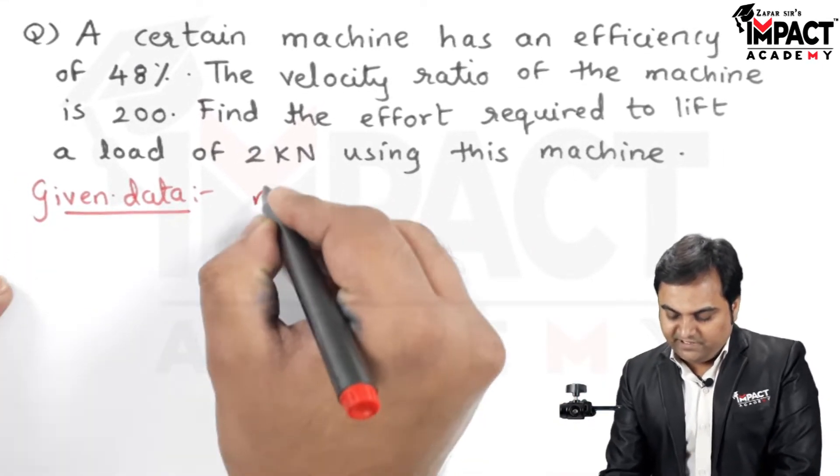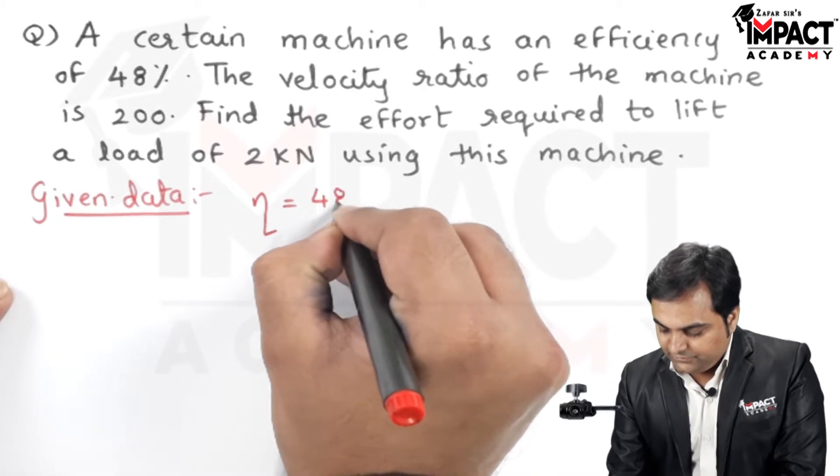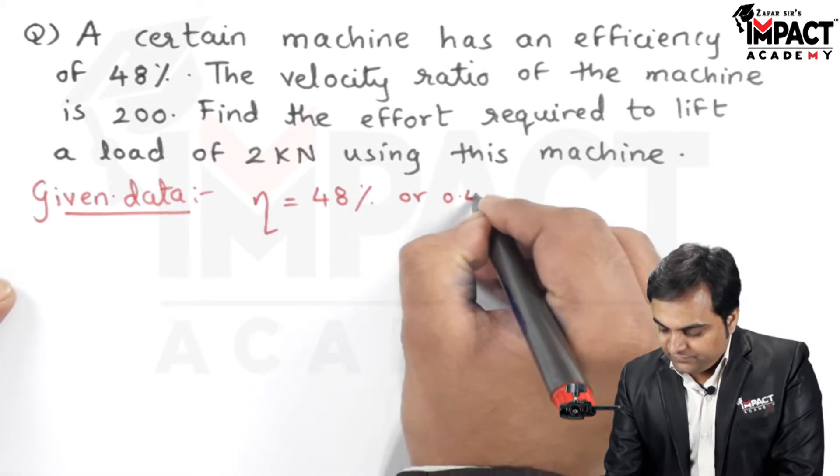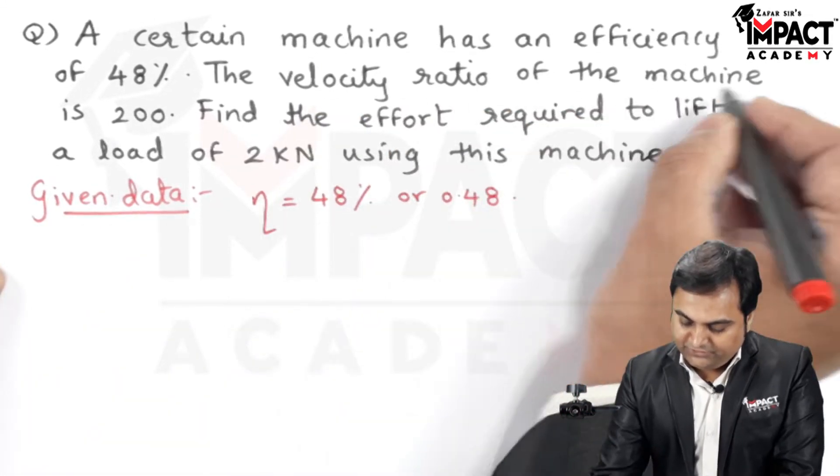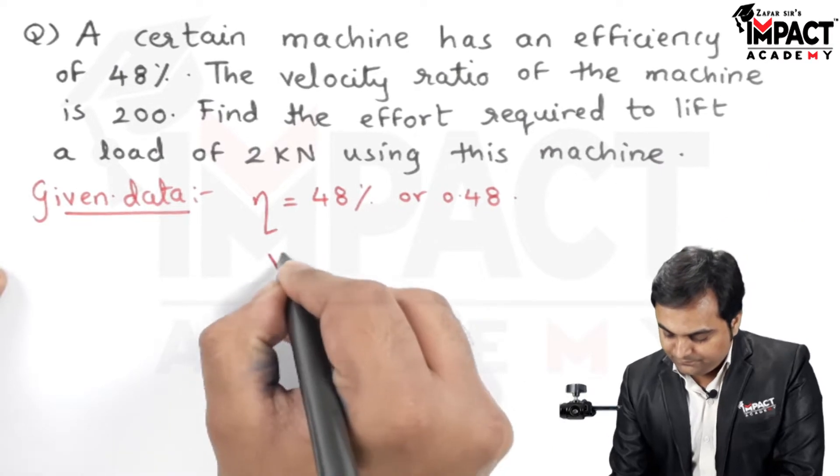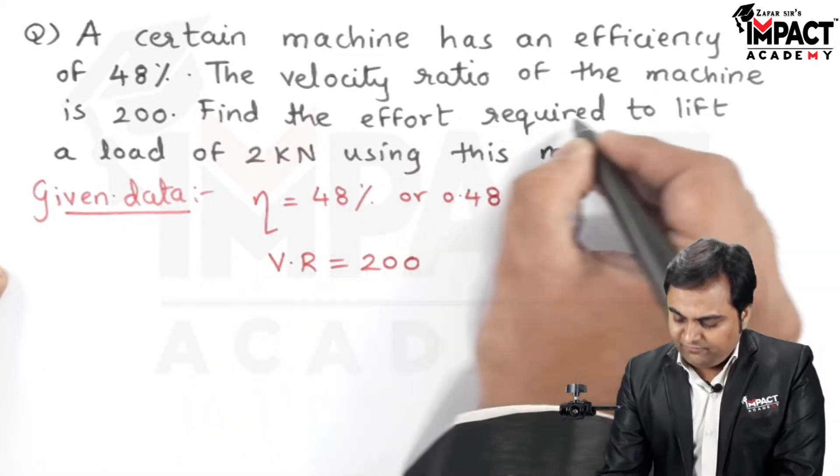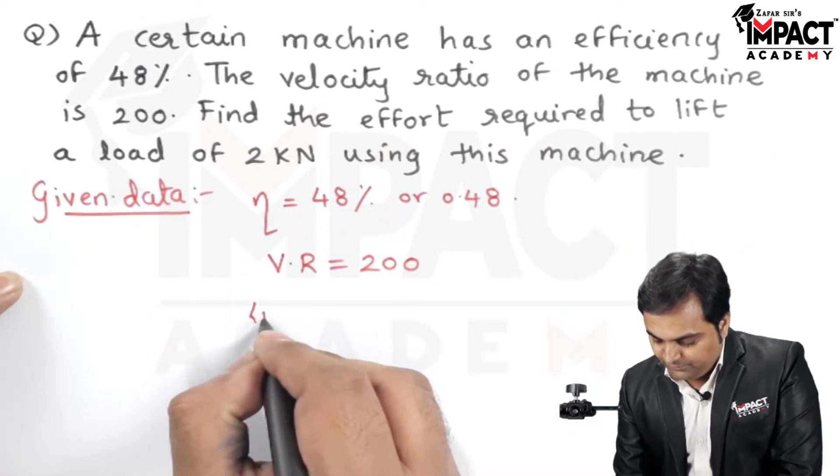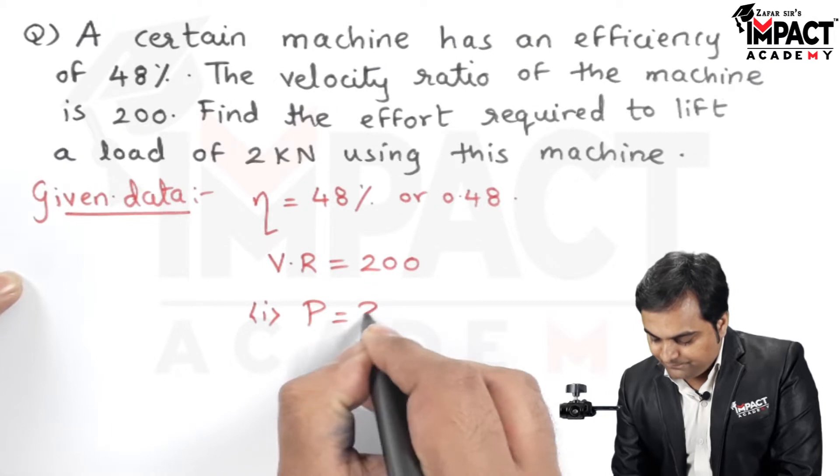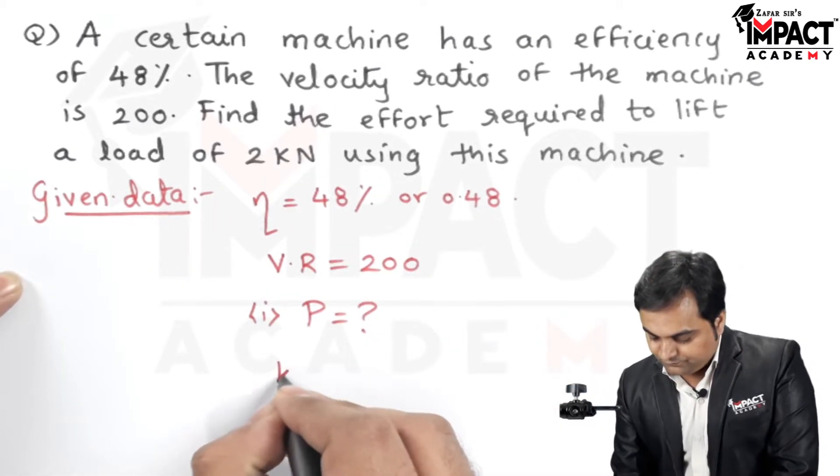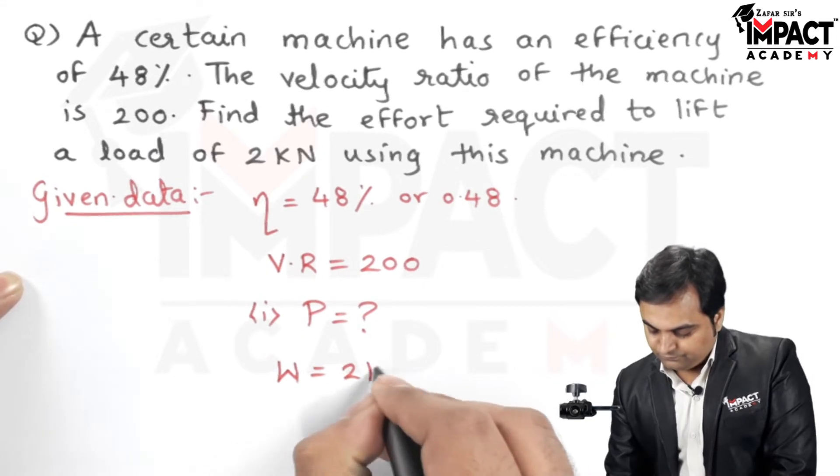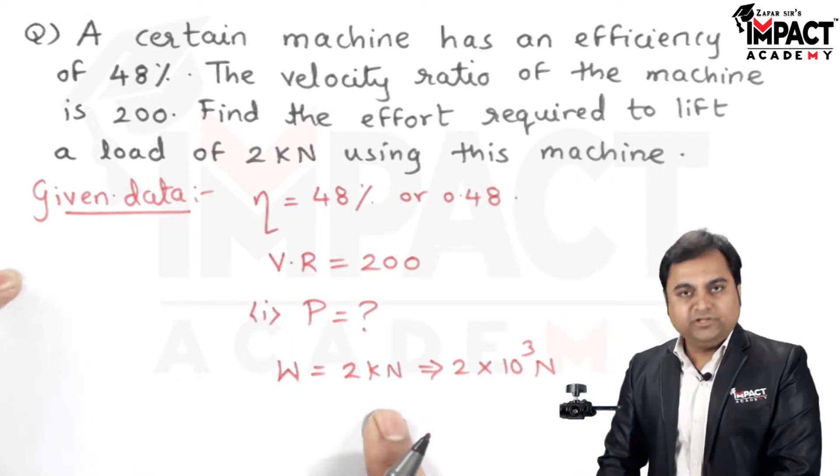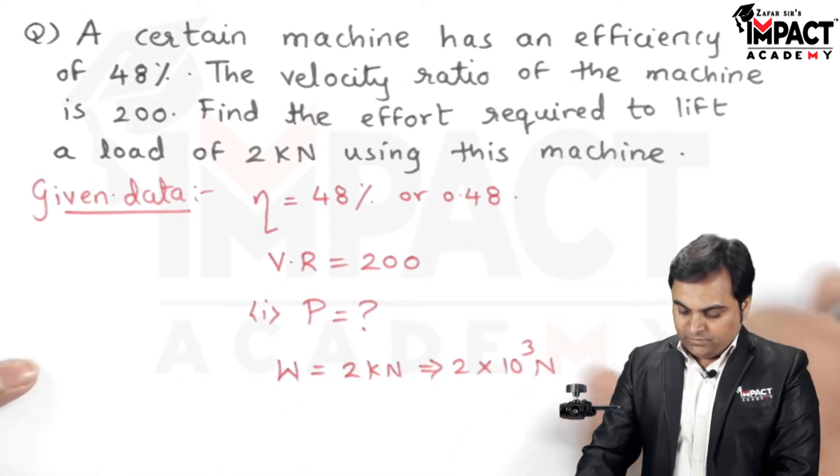Efficiency is denoted by eta (η), that is 48%, so if I write it in the form of a number that will be 48 divided by 100, so it is 0.48. Next, the velocity ratio of the machine is 200. Find the effort required to lift a load of 2 kilonewtons. Effort is denoted by capital P, load is given as 2 kilonewtons, that is denoted by capital W. So it is 2 into 10 raised to 3 Newton, because 1 kilonewton is 1000 Newton.